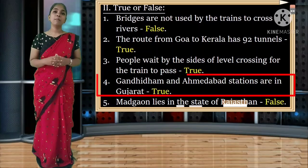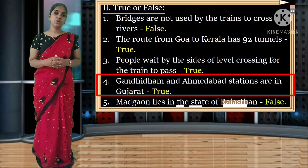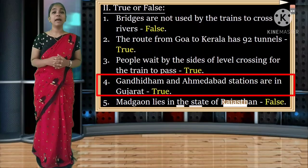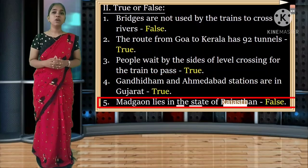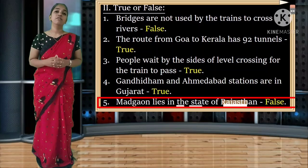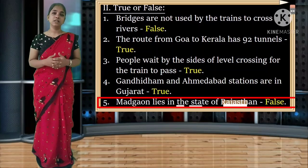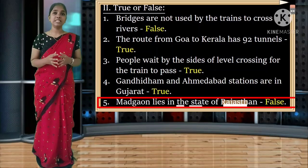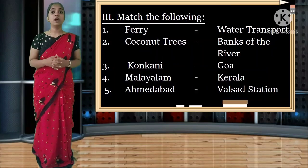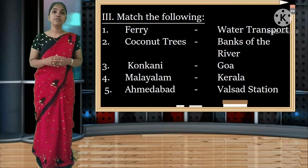Fourth: Gandhida and Ahmedabad stations are in Gujarat - the answer is true. Fifth: Magdhima lies in the state of Rajasthan - it is a false statement. Next we are going to revise match the following.